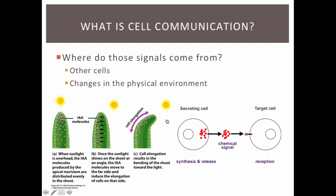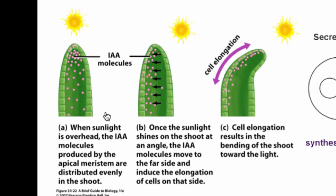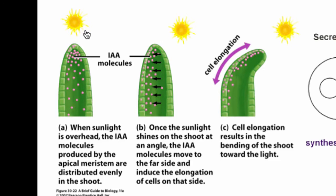Signals not only come from other cells, but they can also come from changes in the physical environment. For example, plants grow towards the sun. There's a chemical in the tip of a plant shoot known as auxin. Auxin is in an even distribution when there's an even distribution of light, but when there's an uneven distribution of light, auxin moves away from the light towards the dark side. Since auxin stimulates cell growth, the darker side grows faster, causing the plant to curve towards the sun.